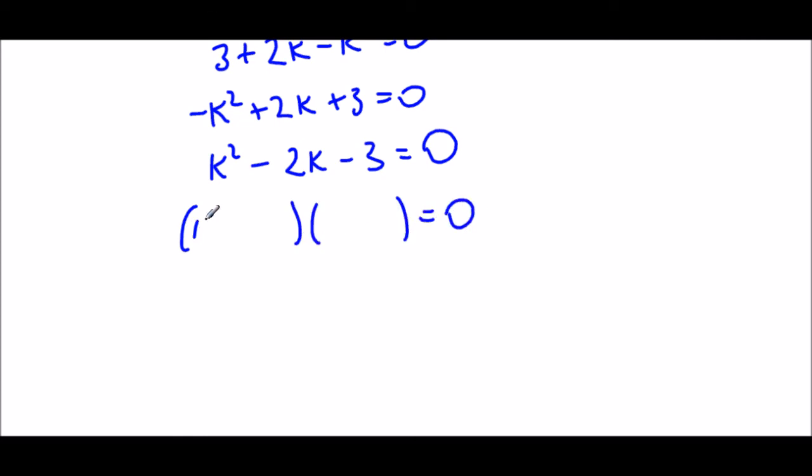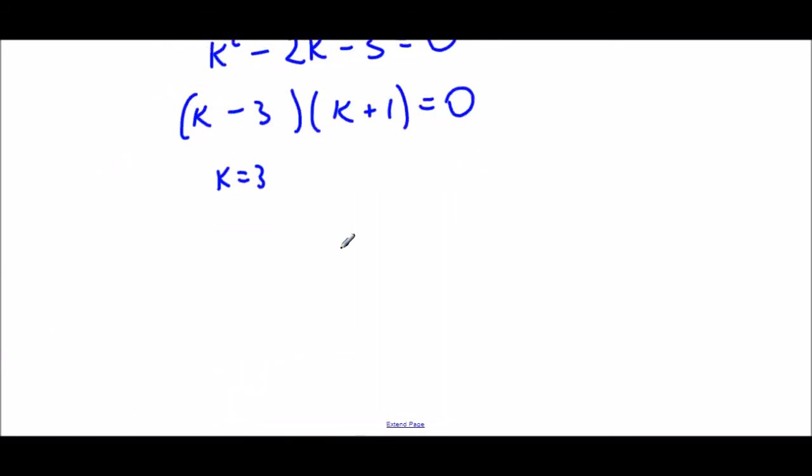Two numbers that multiply to negative three and add to negative two are negative three and positive one. So that means that k equals three is a valid answer to this expression. And k equals negative one is also a valid answer.